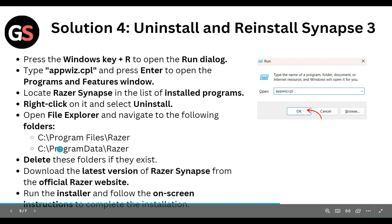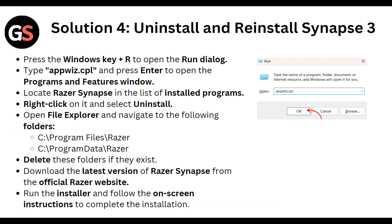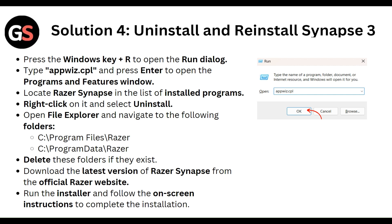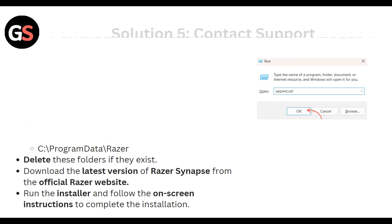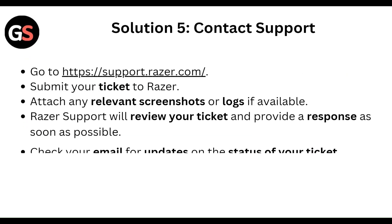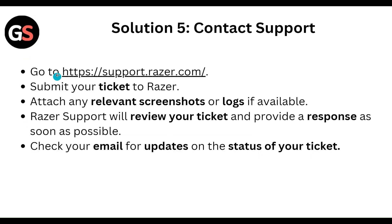Open File Explorer and navigate to the related Synapse folders and delete them if they exist. Then download the latest version of Razer Synapse from the official Razer website, run the installer and follow the on-screen instructions to complete the installation.